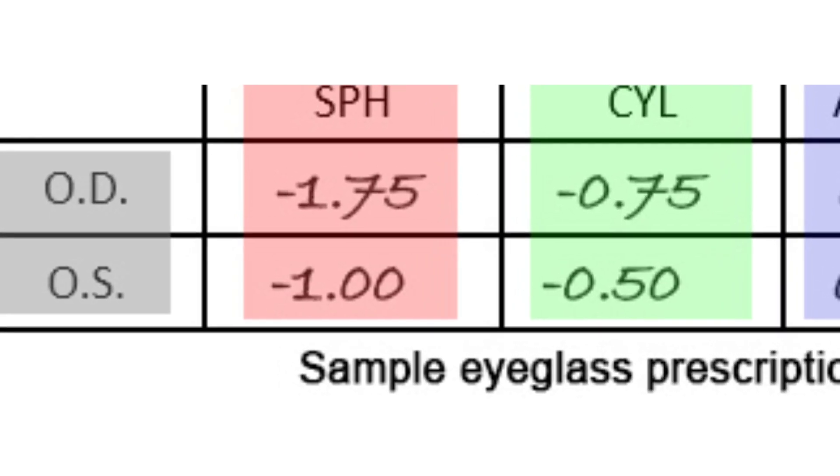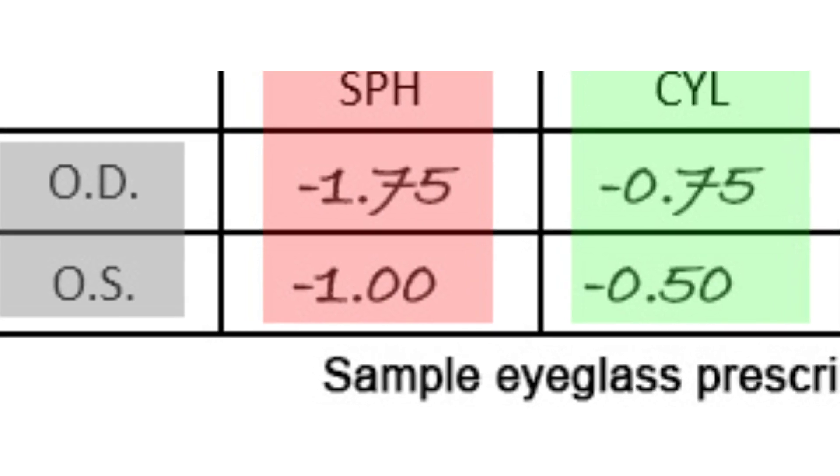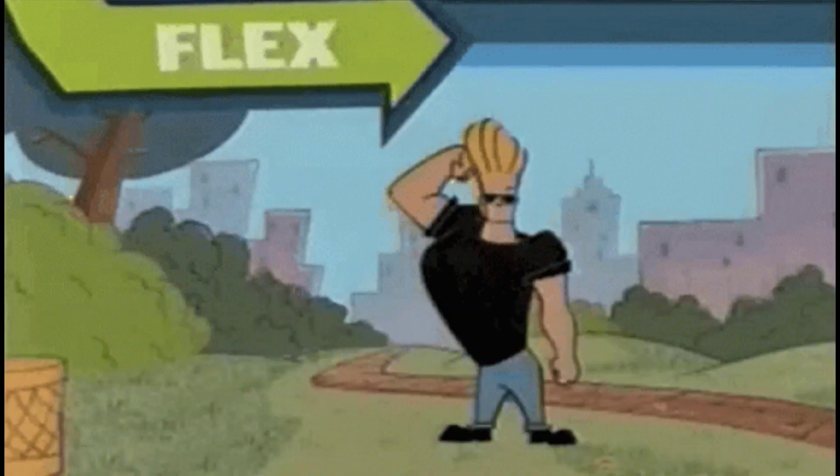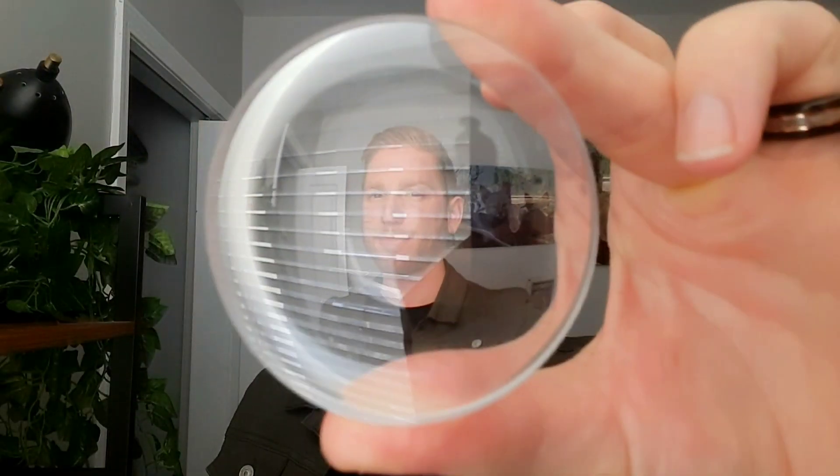The first number you probably see on your prescription is SPH or spherical. This describes the overall power of your lenses. If your SPH number is positive, you have positive or plus lenses that magnify images, making them bigger, while if your SPH number is negative, you have negative or minus lenses that minimize images, making them smaller.